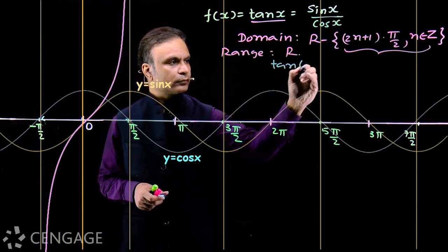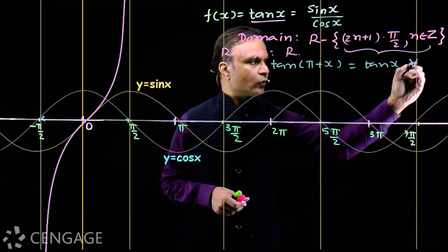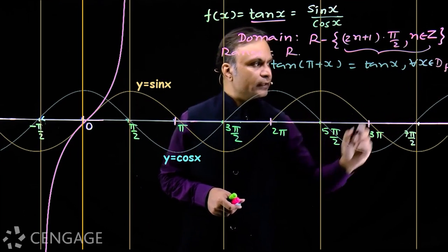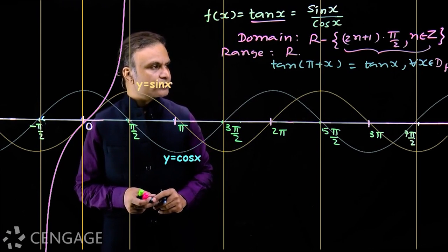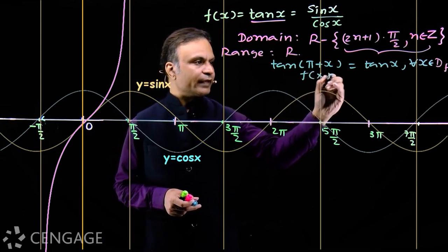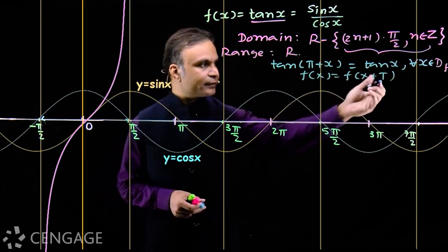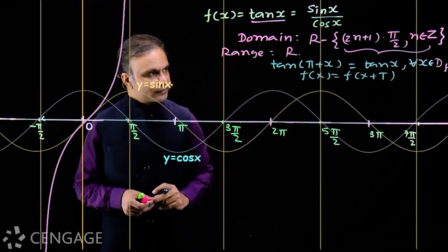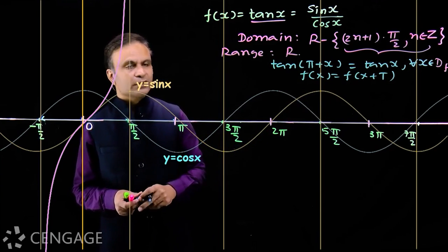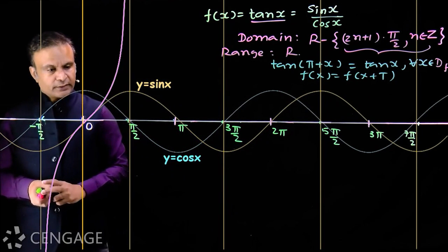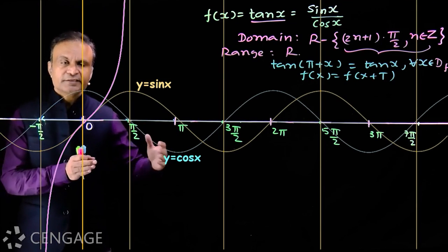We know that tan(π + x) = tan x for all x in the domain. This means the period of tan x is π — it is the smallest positive real number T for which f(x) = f(x + T). So π is the fundamental period of the tan x function.